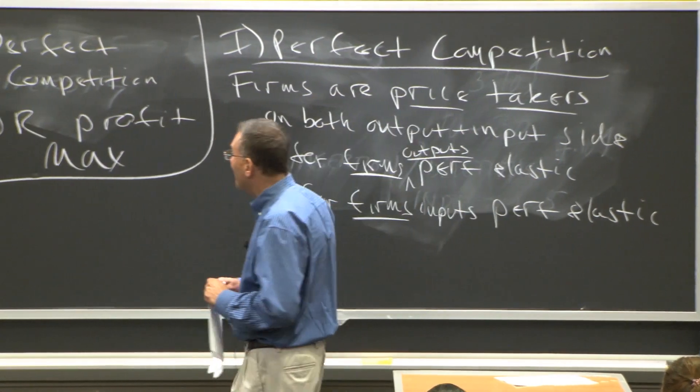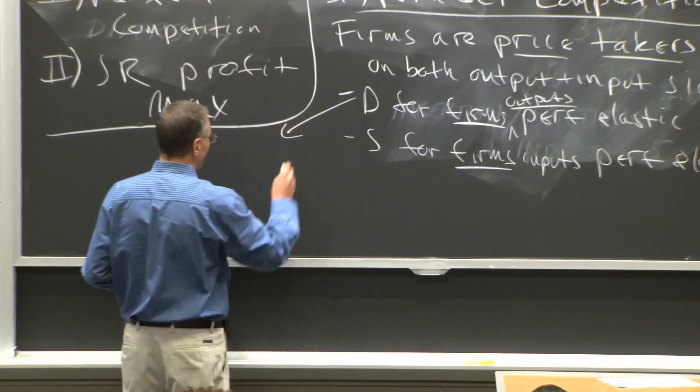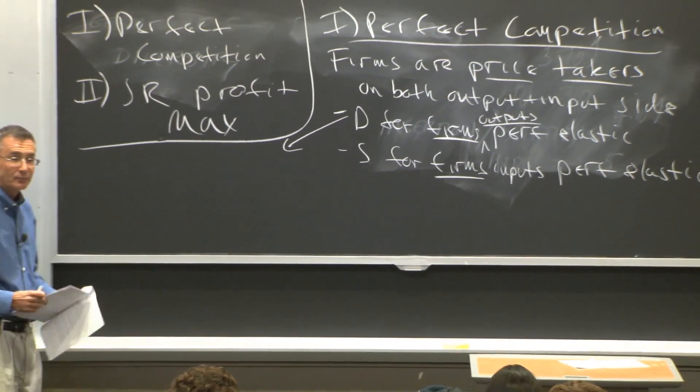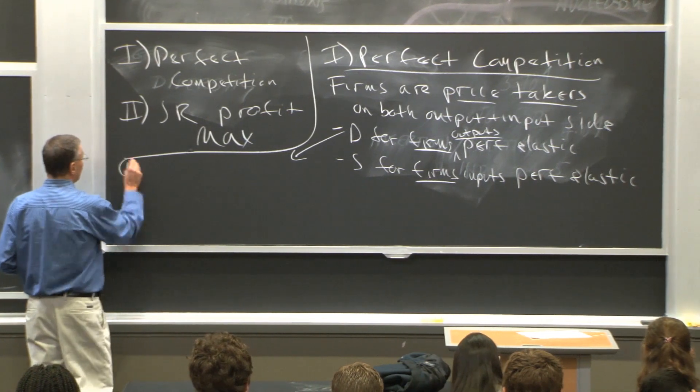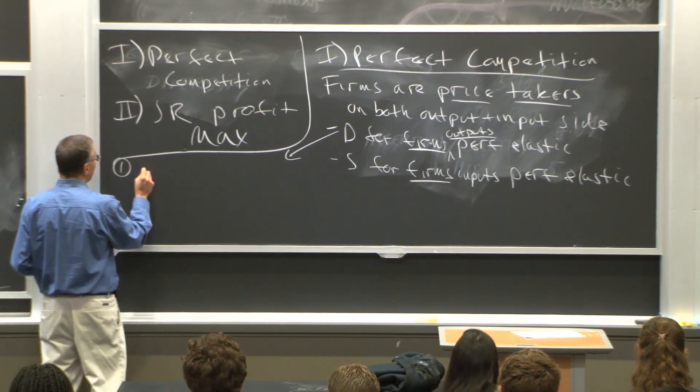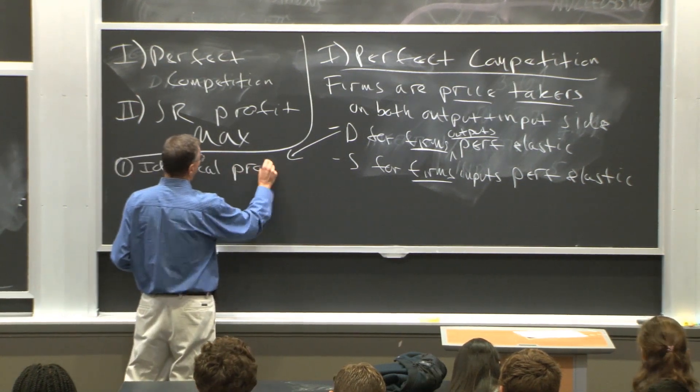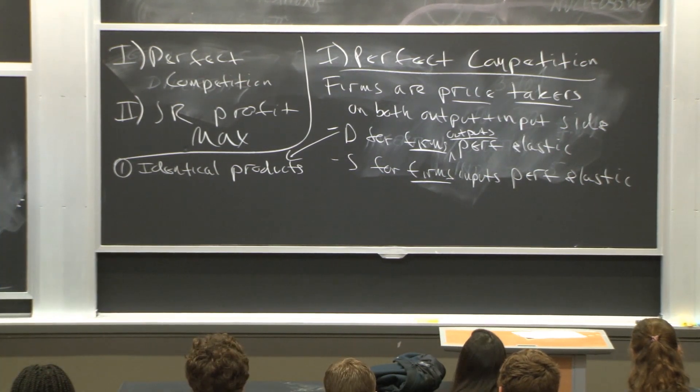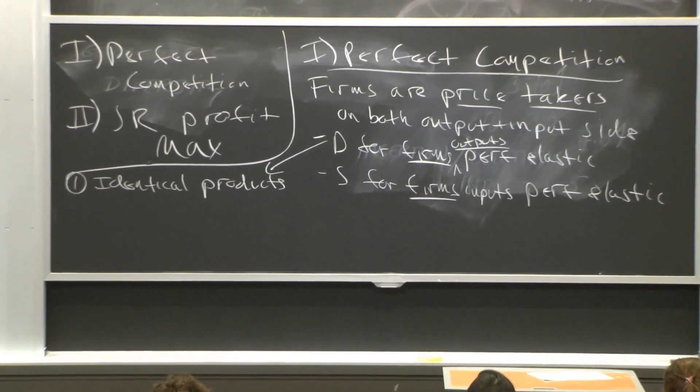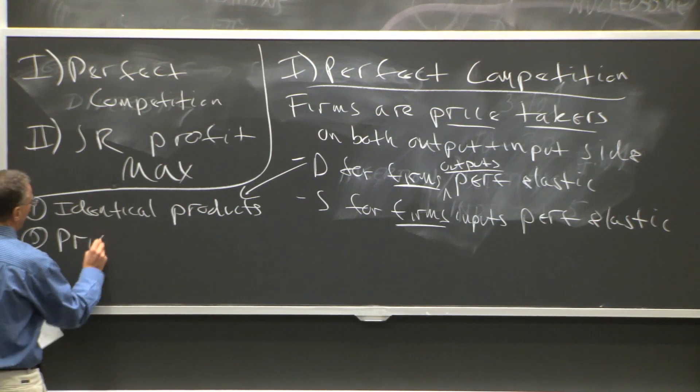Now, when does it make sense that demand be perfectly elastic? Well, demand be perfectly elastic under several conditions. Each of which is important. First of all, consumers believe that firms sell identical products. Now, once again, the products don't have to be identical, but consumers have to believe they're identical. So the consumers believe that there's a series of firms in a market that sell identical products.